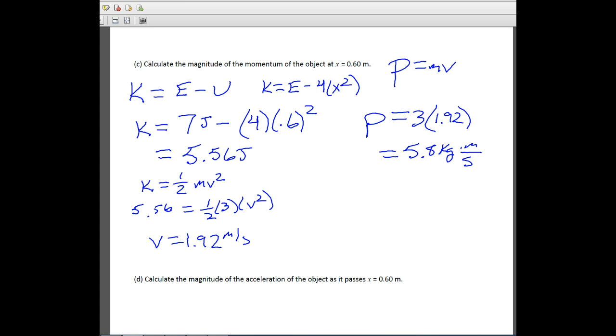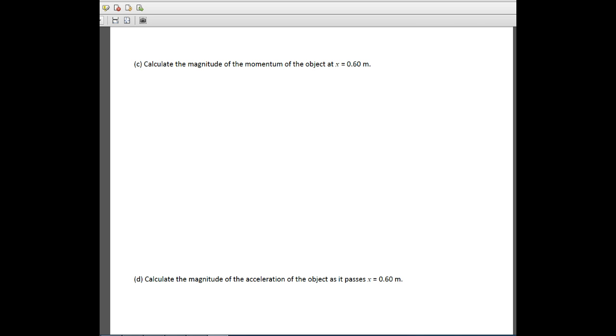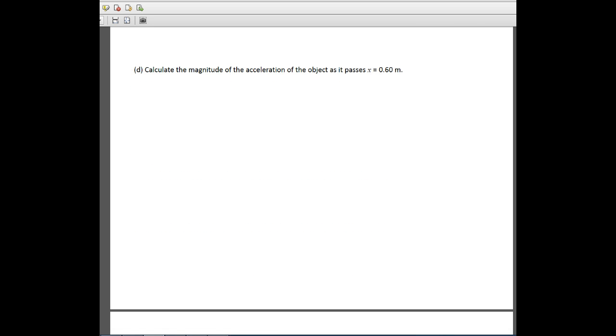Next part that we need to do is part D. In this one, they want us to calculate the magnitude, the acceleration of the object as it passes that same point, that 0.6 meters. So here we need to, we can do it one of two ways. We can either look at it using the relationship between potential energy and force, or we can do it just looking at total energy. Either one is absolutely fine. Either one will give you the same answer. Let's do it using the potential energy. Just think about how potential energy relates.